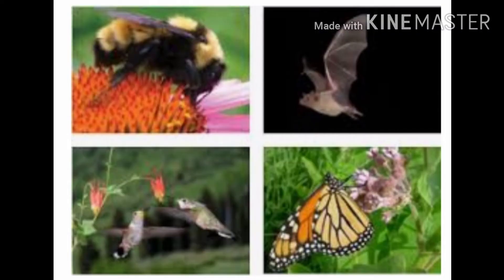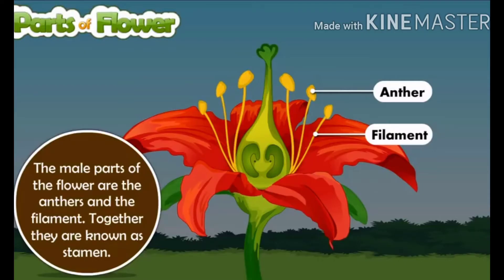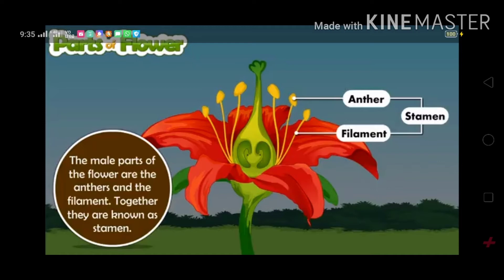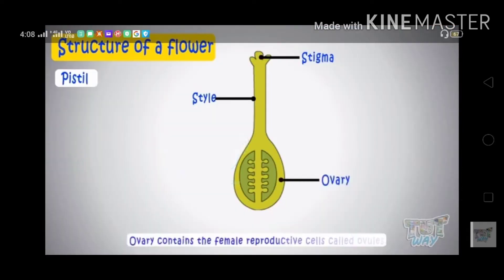Petals also protect the inner reproductive structure of a flower. Stamen is the main male part of a flower. It consists of two parts: anther and filament. The anther is a yellowish sac-like structure which is involved in producing and storing the pollen grains. The filament is a slender thread-like structure which supports the anther.